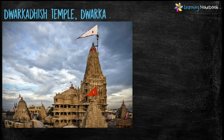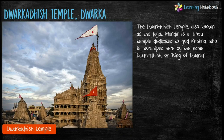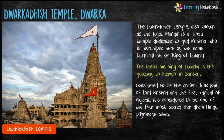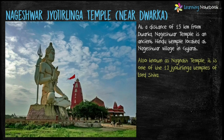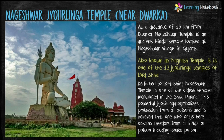Next religious site is Dwarkadhish Temple, also known as Jagat Mandir, a Hindu temple dedicated to Lord Krishna. Krishna is worshipped here by the name Dwarkadhish, or King of Dwarka. Next is Nageshwar Jyotirlinga Temple, located at a distance of 15 km from Dwarka, an ancient Hindu temple at Nageshwar village in Gujarat, dedicated to Lord Shiva.